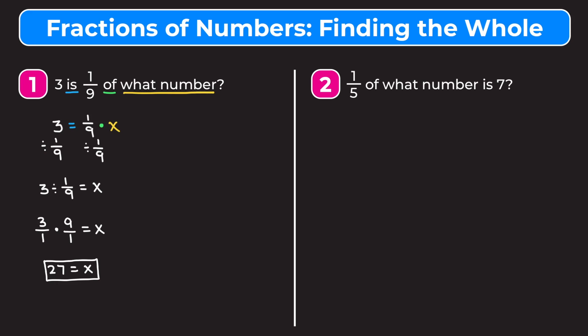There is a shortcut when your numerator is equal to one: you can just multiply your number — three — by the denominator of the fraction. So three times nine gives us 27. But I think it's important to understand how we set up this equation, because I don't love it when students just memorize shortcuts.